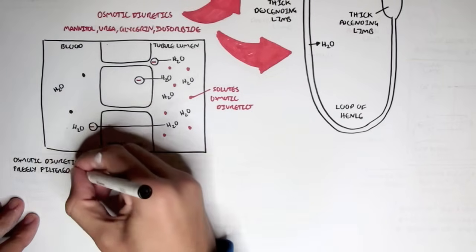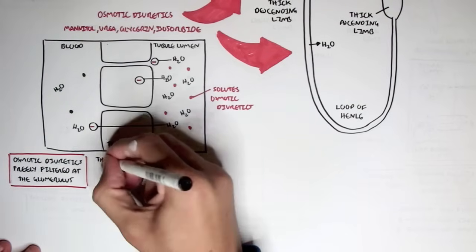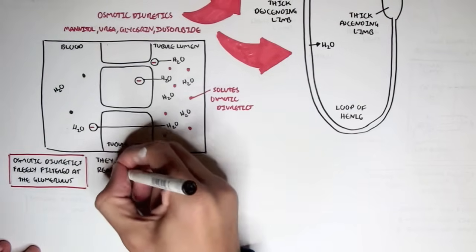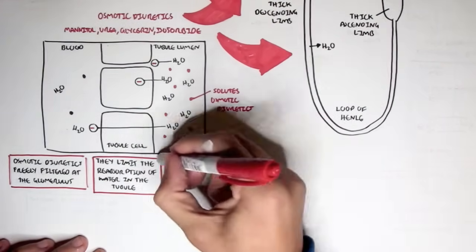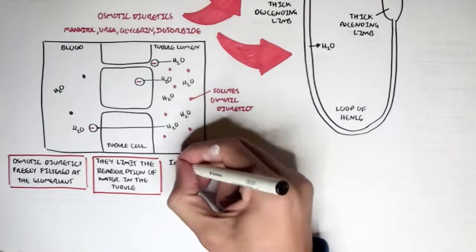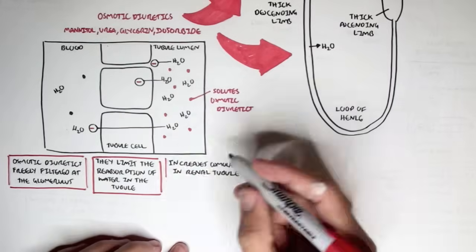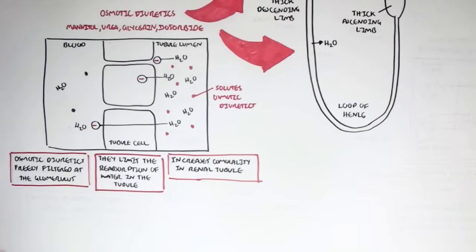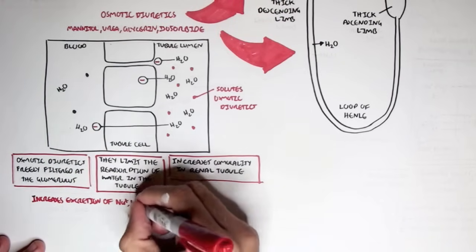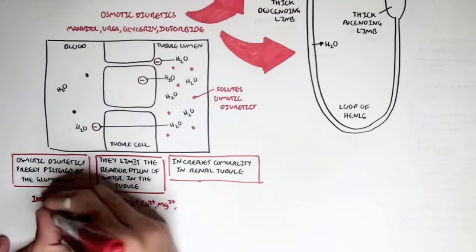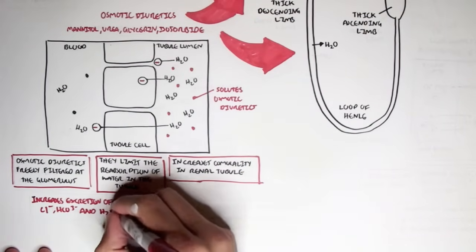Osmotic diuretics, when taken orally or intravenously, enter the bloodstream and are freely filtered at the glomerulus, entering the tubule. Their function is to limit the reabsorption of water in the tubule by increasing the osmolality in the renal tubule. Overall, they increase the excretion of sodium, potassium, calcium, magnesium, chloride, bicarbonate, hydrogen, phosphate, and water.